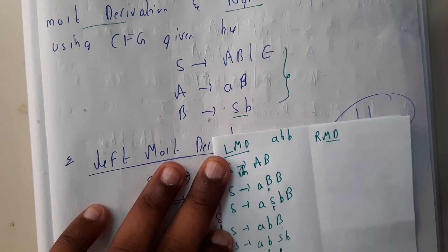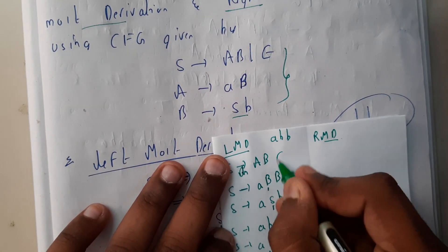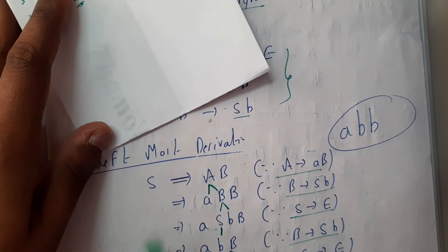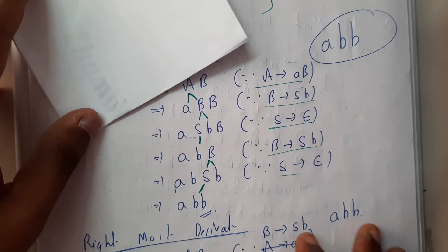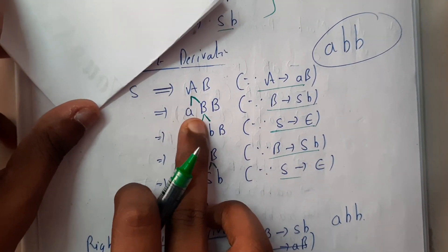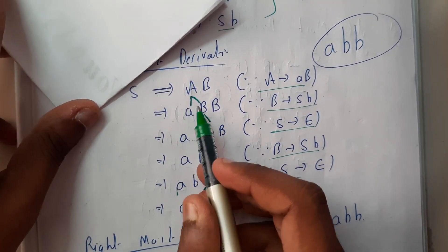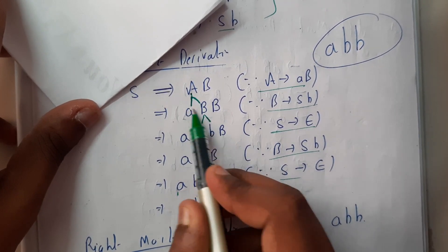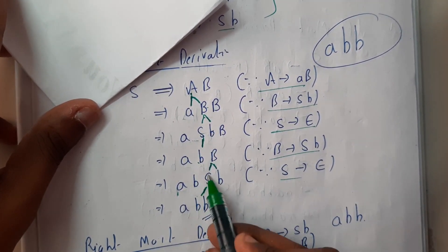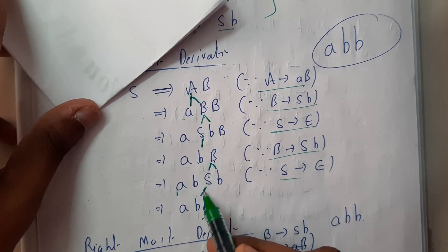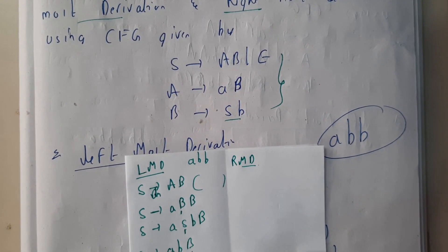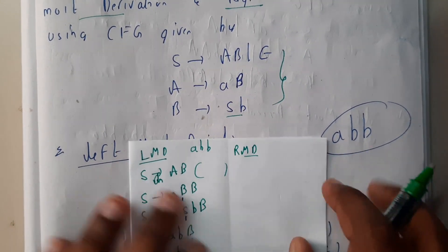While writing this, you can note in brackets which production rule you are using, so the evaluator will have a clear idea of what you are doing. Please do not draw arrows — I drew them only for your understanding. Just write the substitutions step by step.